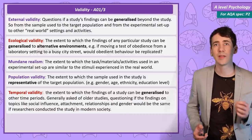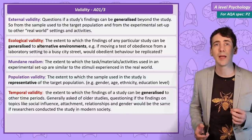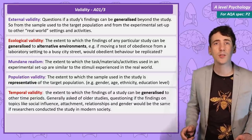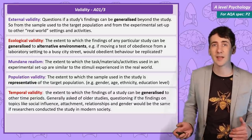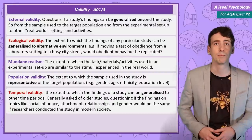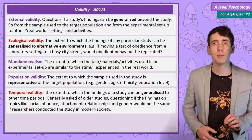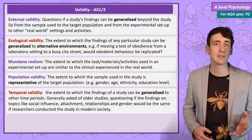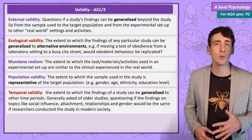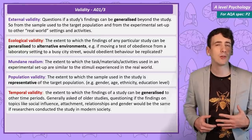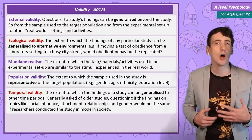Temporal validity is concerned with whether a finding can be applied across time. Many older studies were conducted when politics, society, and technology were very different. Some older studies, perhaps on areas like obedience, gender identity, and relationship formation, might be outdated and might not be an accurate explanation of modern human behaviour today.